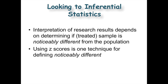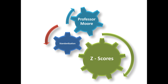Looking forward to inferential statistics: inferential statistics tries to look at data collected and interpret that data. They perform something on a sample and try to see — okay, is that sample that received the medicine, new treatment, or therapy noticeably different from the population? Did our study have an effect? Was our research real? Using a z-score is just one method for defining this noticeably different or statistically significant difference in samples. Do your homework and email or text me with any questions.